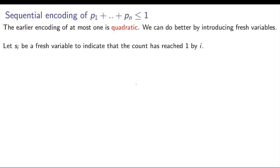By introducing fresh variables we can do in linear size constraints. Let si be a fresh variable to indicate that the count has reached 1 by index i. So the fresh variable si means that if you count number of bits which are true from 1 to i, if any one of them has been 1 then you say si equals to 1.